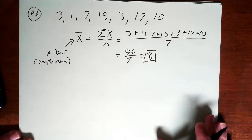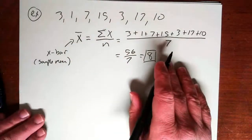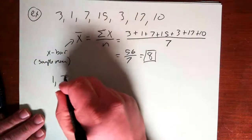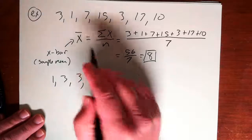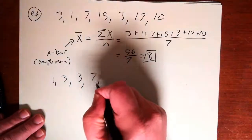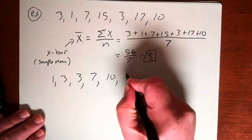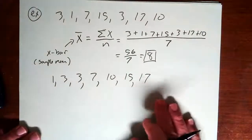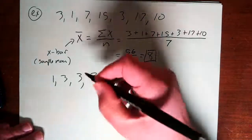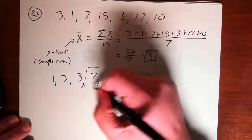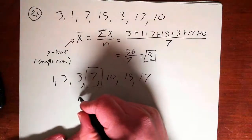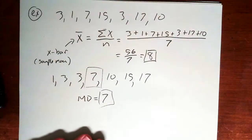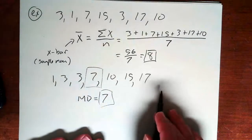Now for the median, you have to put the data in order first, from least to greatest: 1, 3, 3, 7, 10, 15, 17. That's seven values. The median is just the middle value in the ordered data set. In this case, 7 is in the middle — I'll use MD to stand for the median — so the median is 7. That's the value that lies in the middle with three values on each side.